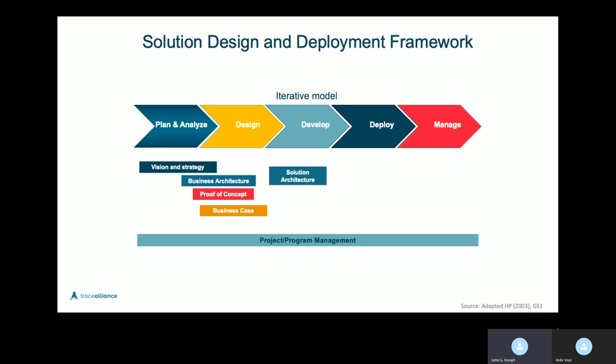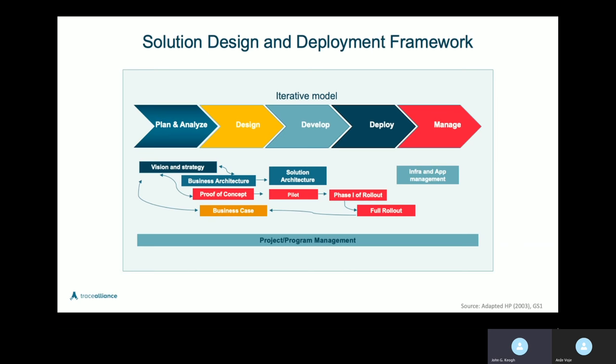After you do that, you can look at the solution architecture — the technical architecture for the solution and how it will integrate with the enterprise. Remember how the data flows from the operational level up to the tactical level and up to the strategic level — that's really what's captured in this section. Then you do your pilots, prove it out, and your pilot iterates back to your solution architecture. You do your full rollout, and then you have to manage it. This model iterates back and forth.